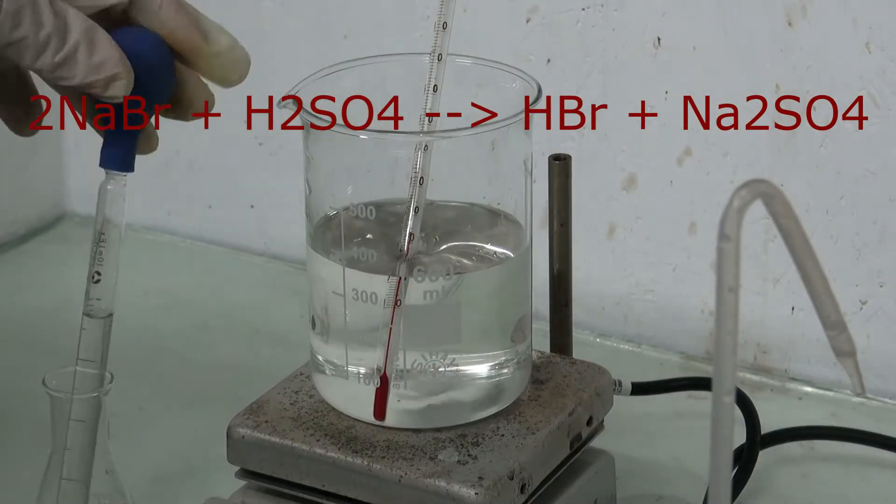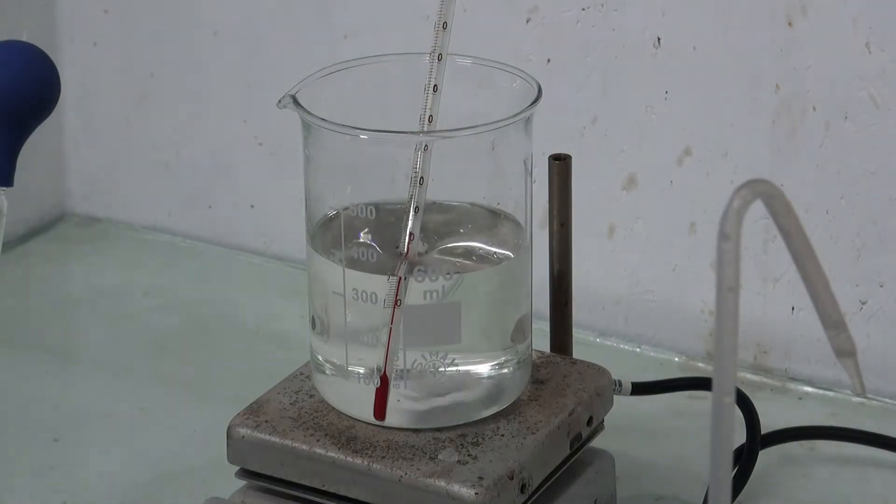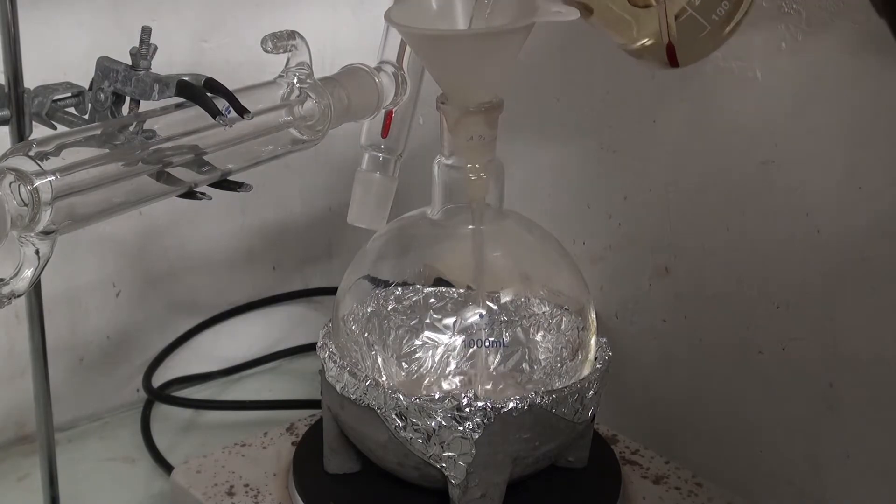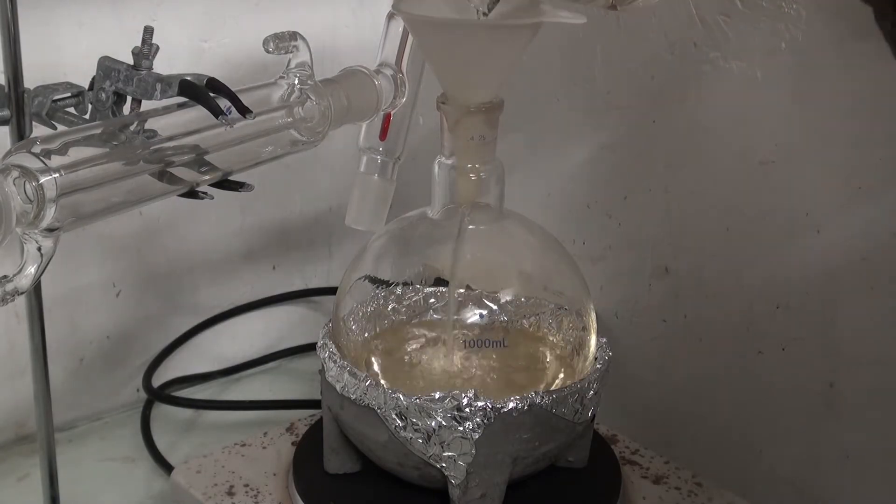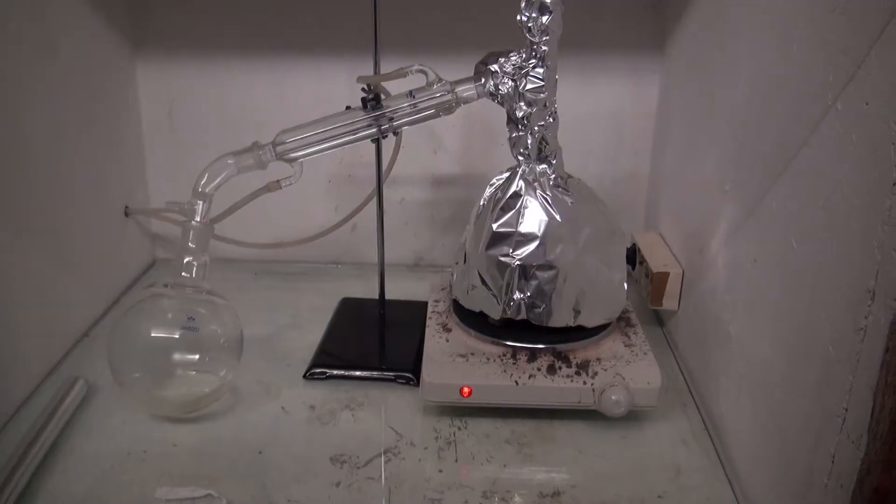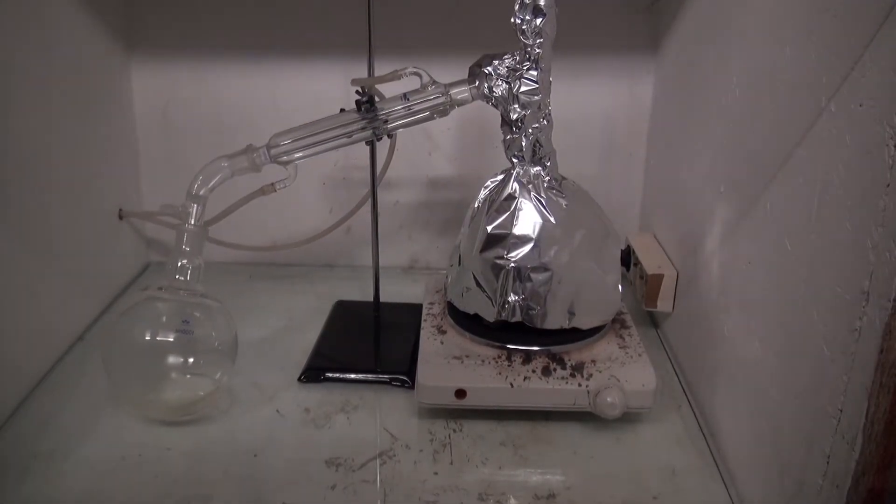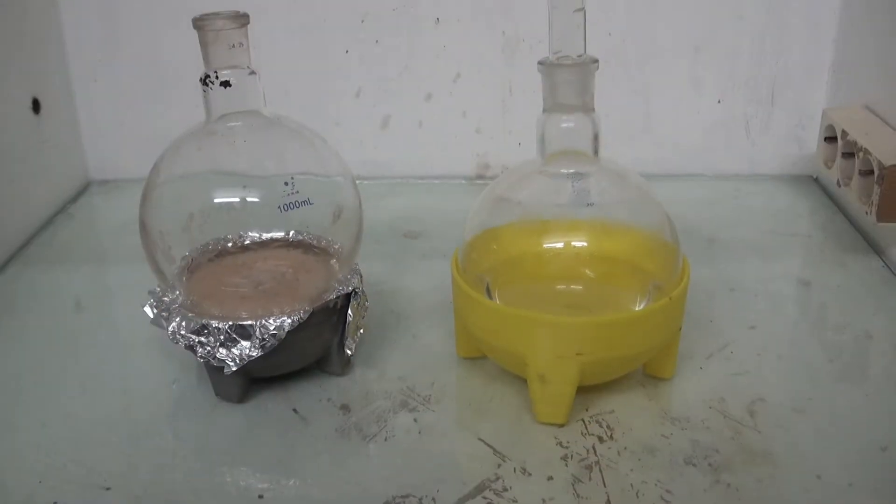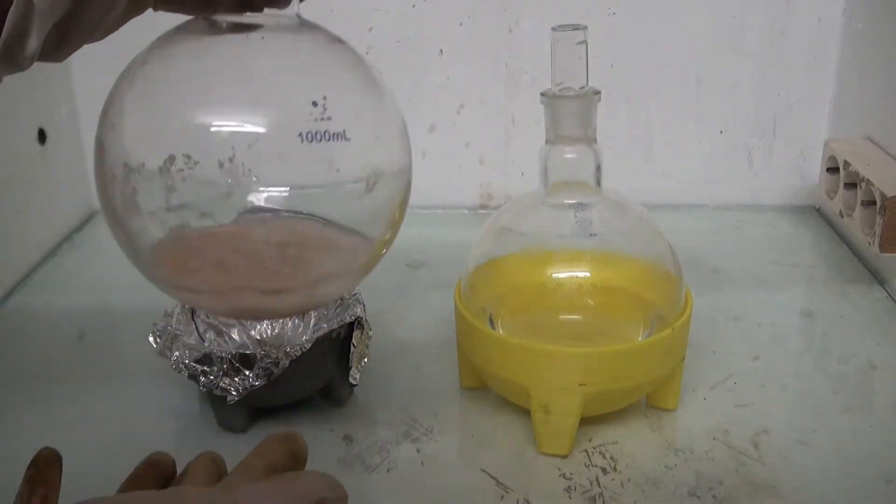I mixed it with 1 mole of sulfuric acid and then distilled it off. With this step I probably lost about 50% of my hydrobromic acid.